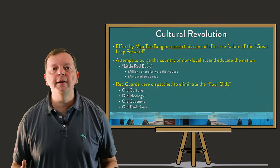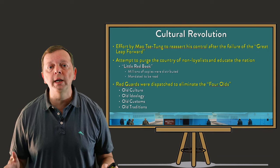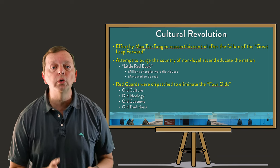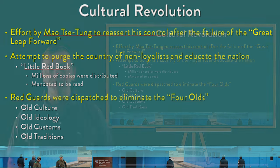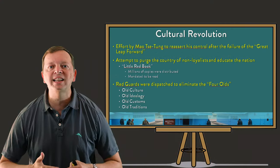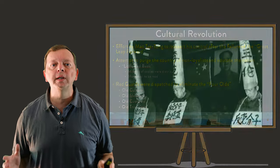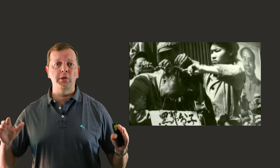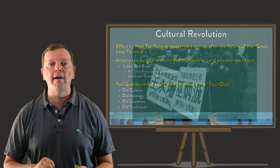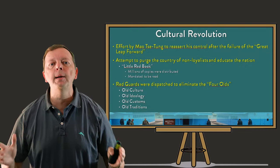The devastating effects of the Great Leap Forward caused many Chinese to lose faith in the government and Mao Zedong. So in 1966, Mao launched the Great Proletarian Cultural Revolution. For the next 10 years in China, the government would attempt to purge the country of those who were not loyal to the communist regime. Intellectuals were targeted to be imprisoned or sent off to be re-educated. In fact, 80% of the professors at the University of Beijing were arrested during this time.